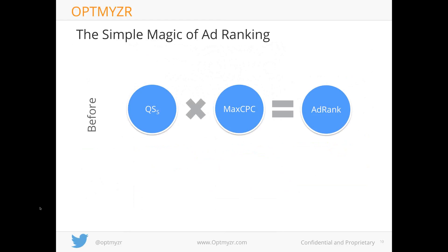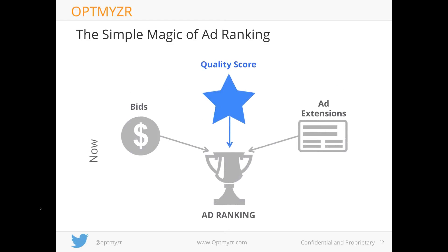As for how ad ranking works: up until recently, it was quality score multiplied by maximum CPC to get your ad rank. Google recently changed it — quality score and maximum CPC are still the two factors, but it's no longer a straight multiplier. About a month ago, Google also added ad extensions as a third factor in ad ranking. So if you understand and improve your quality score, you improve your rank, get more clicks, and pay less money.